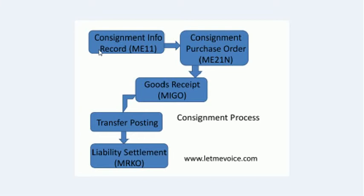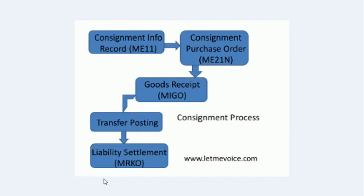The actual process in our system: first, create a consignment info record by selecting info category as consignment in transaction code ME11. Then create a purchase order in transaction code ME21. After that, perform transfer posting and liability settlement. MRKO is used for vendor consignment liability settlement — it is different from MIRO, which is the standard invoice verification transaction.